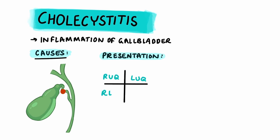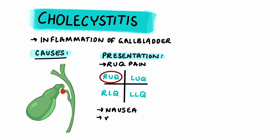In terms of presentation, since the gallbladder is in the right upper quadrant, patients have pain in this area and often due to referred pain they can also have pain in the right shoulder. Other presentations include vomiting, nausea, and fever. However, a key thing to remember is that acute cholecystitis does not cause jaundice.